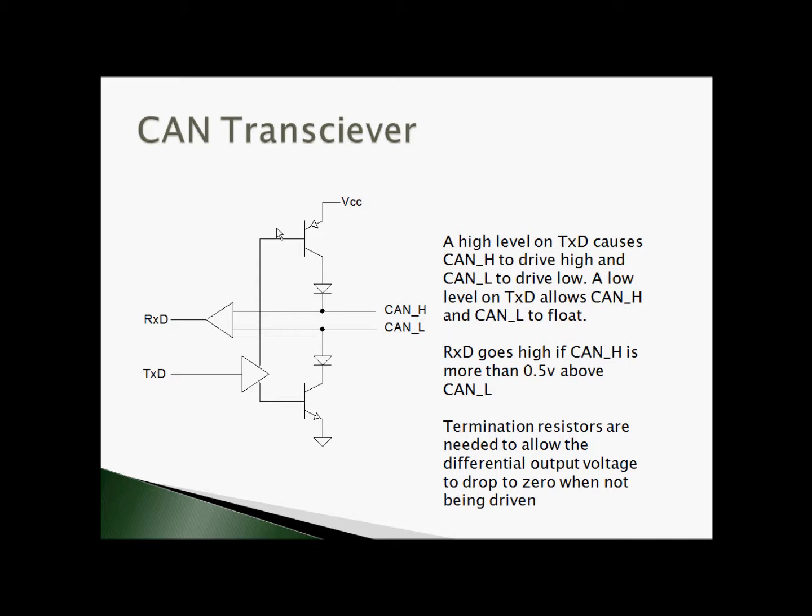If TXD is inactive, both the upper and lower transistors will be turned off and the diodes will isolate them from the bus. The diodes also allow more than one transceiver to be on at the same time without back driving. Whichever produces the highest high level will be sourcing and whichever produces the lowest low level will sink, and we'll still end up with a differential voltage across the bus. Note that termination resistors are needed to cause the bus to return to zero after being driven to an active or dominant state, and the bus will not work without termination.